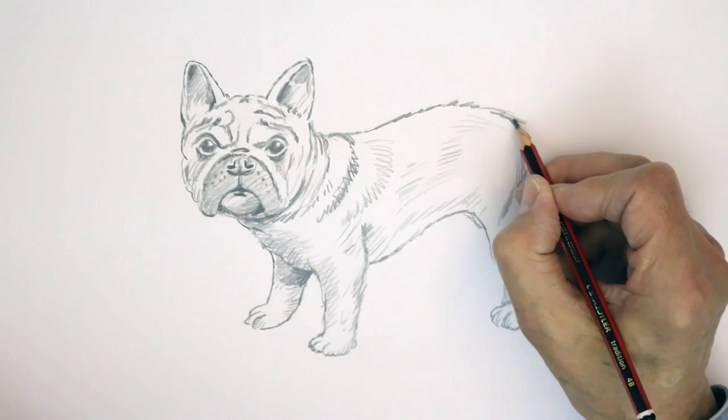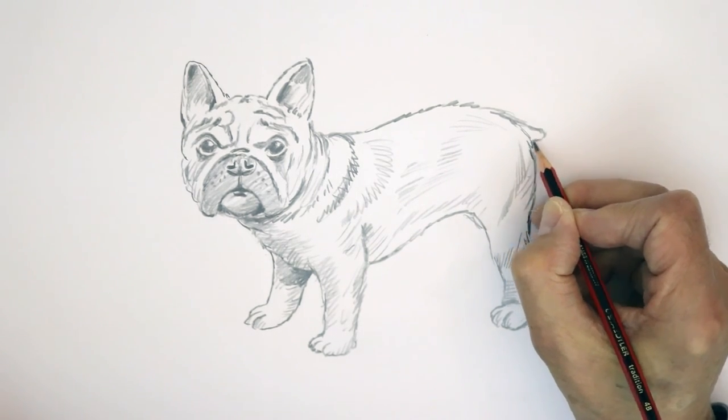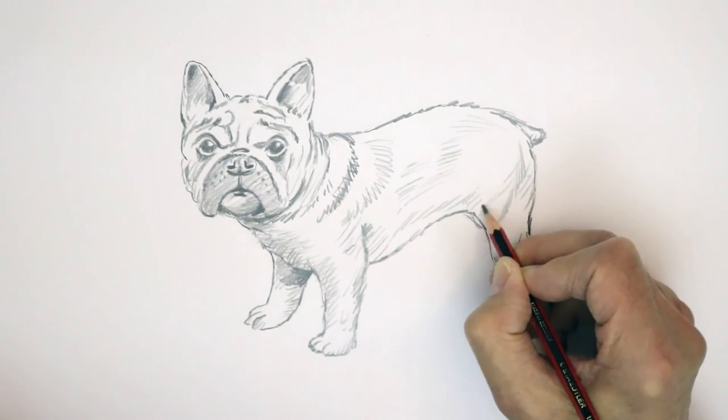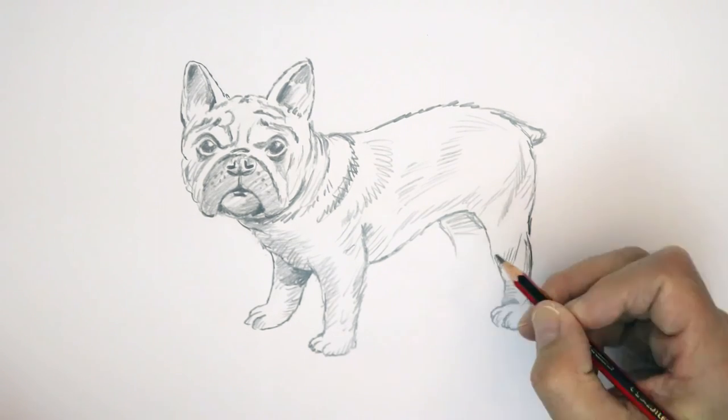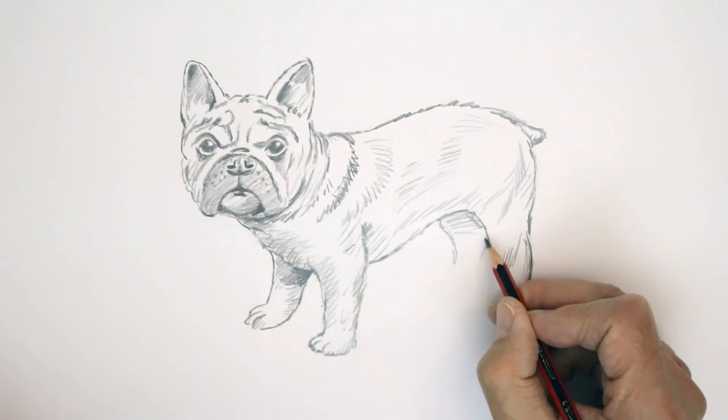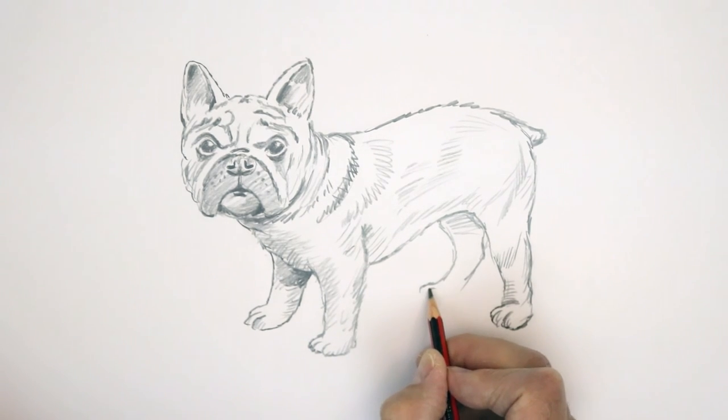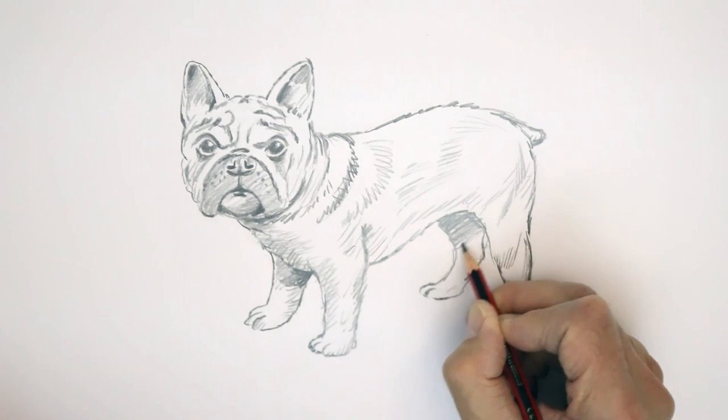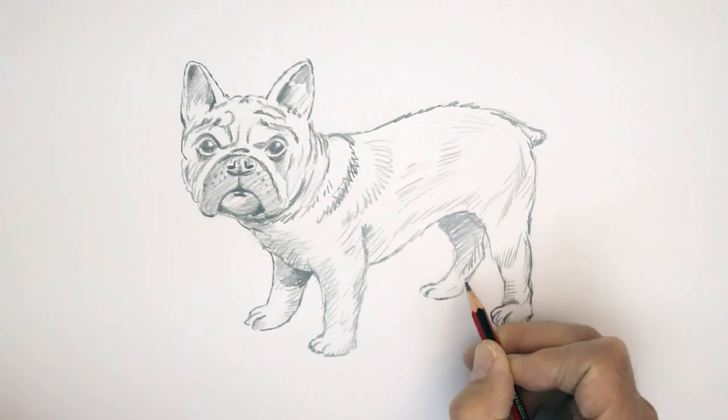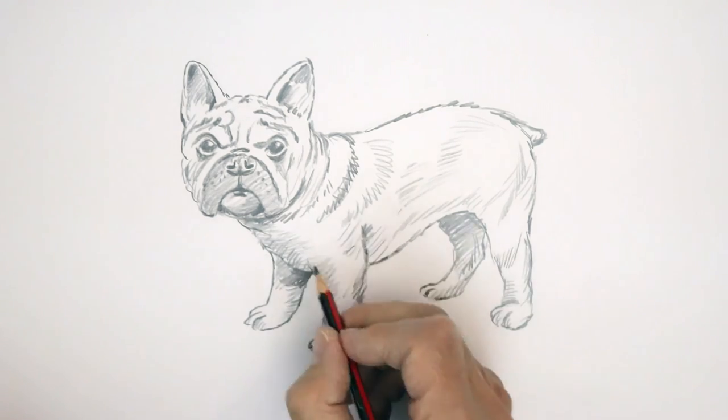And a little stubby tail. Most of the tails of French Bulldogs are docked so you get this wee kind of stubby tail here. That's his other leg at the back here. Again, nice and shadowed. Come in to that shape there. And again, you can put the weight on your pencil for the dark areas.